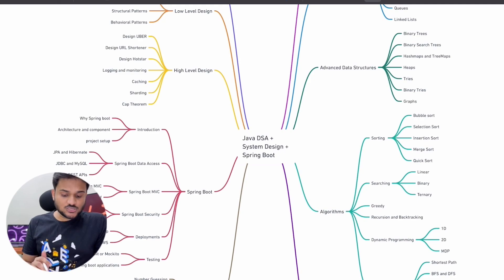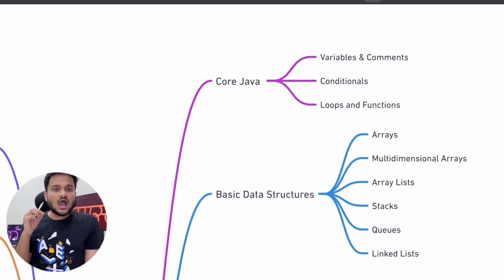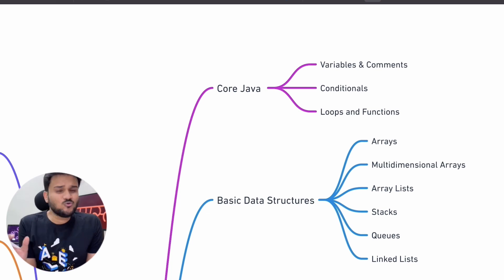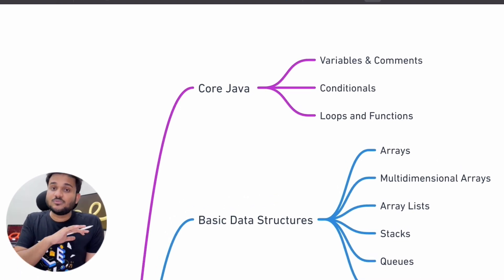This is going to be a power-packed course with an extremely low price. I will first go through the course content — what all we are going to cover — and then we are going to talk about the add-ons that we are going to get in the course. We are technically going to start with core Java because we want to make sure that your fundamentals are as strong as possible. We are not going to assume that you already know Java or already know a lot of things in programming — we are going to help you get started from the very scratch.